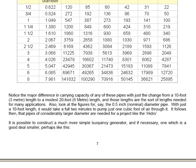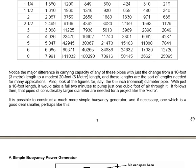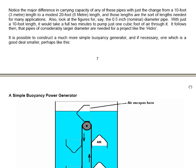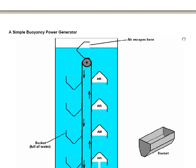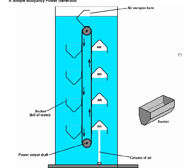It's possible to construct a much more simple buoyancy generator, and if necessary, one which is a good deal smaller. Perhaps like this. You have a container of water, as before, and you've got a series of buckets attached to a cable, which runs around two pulley wheels, which have got a metal shaft to support the pulley wheels.